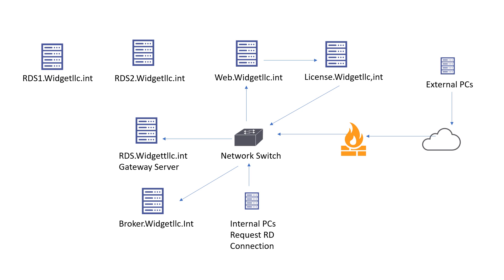The broker server is the one that redirects requests from clients — whether external or internal — and routes them to one of the session servers. The session servers are where all the different sessions serving up the different applications happen. We have RDS1 and RDS2 for that purpose. From the broker, it goes to RDS2 or RDS1 depending on which server has the most resources available or the least number of users. Now let's take a look at the installation and configuration of Remote Desktop Services on a Windows Server 2025.